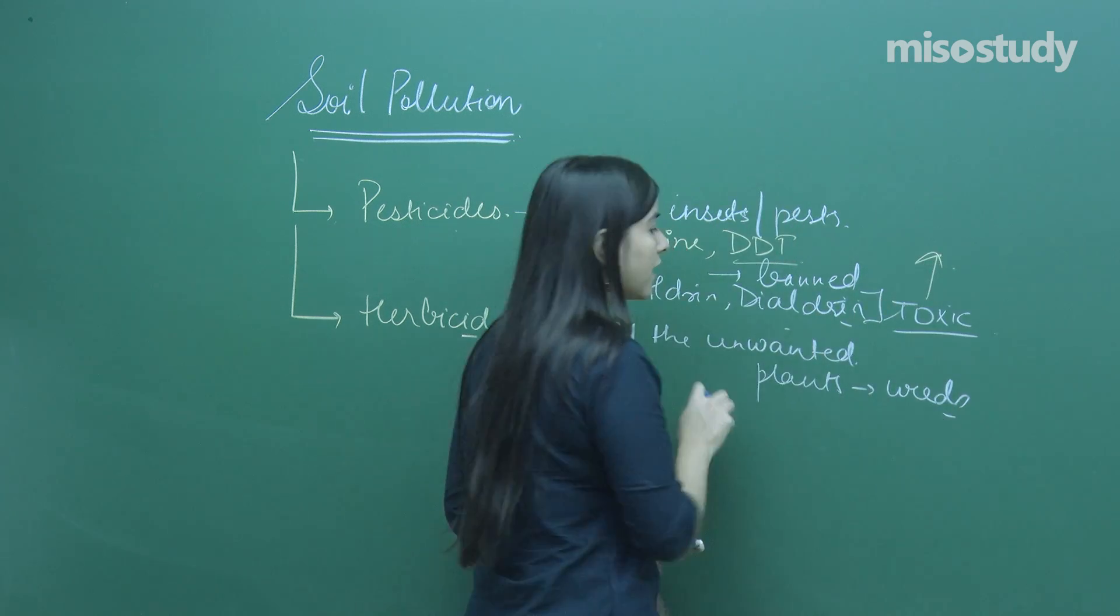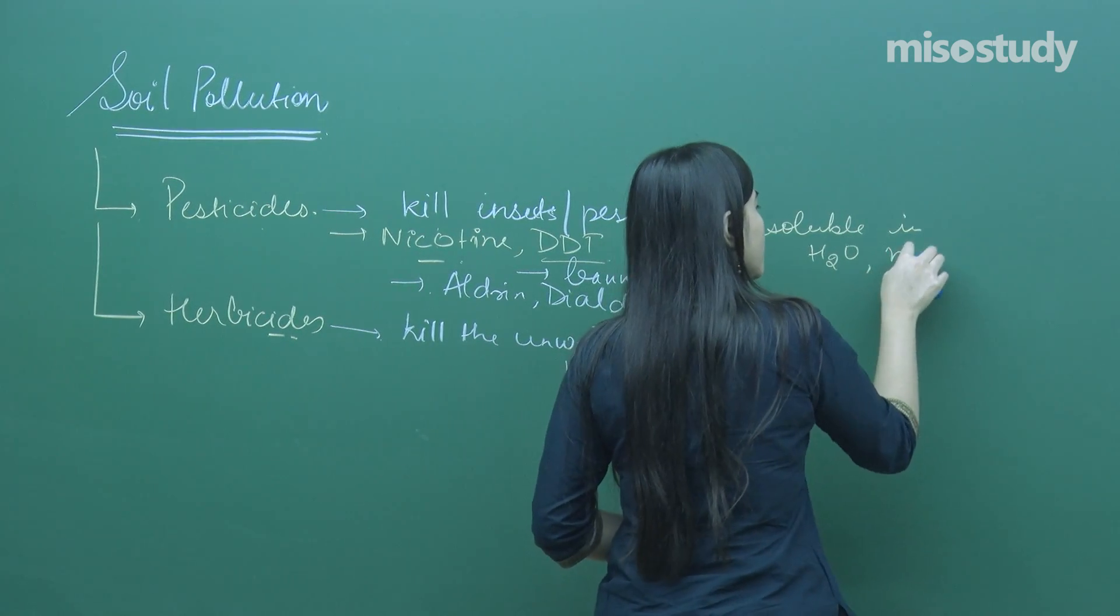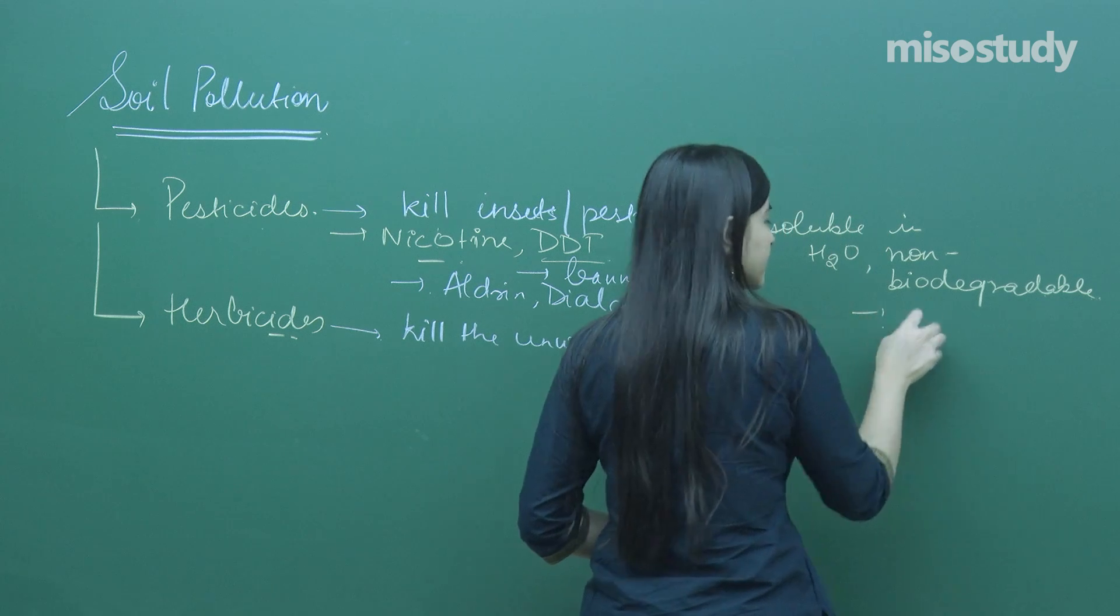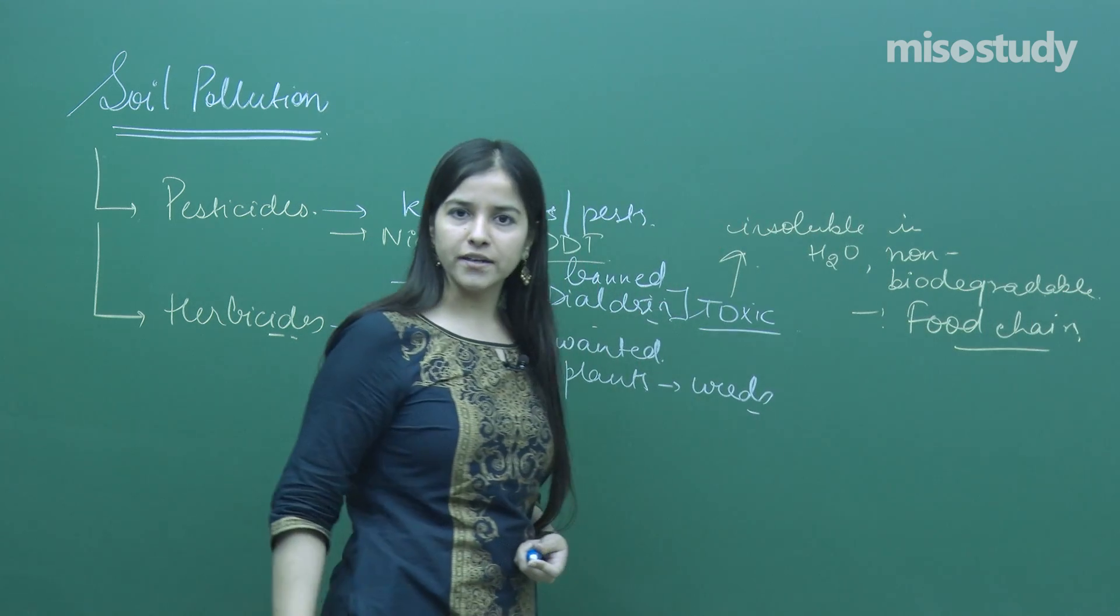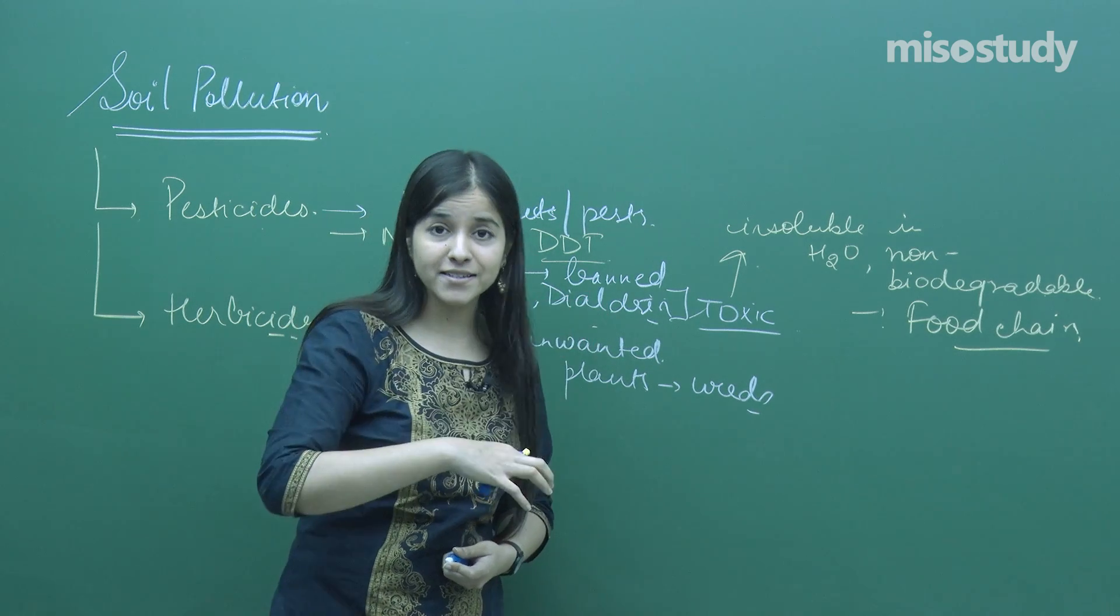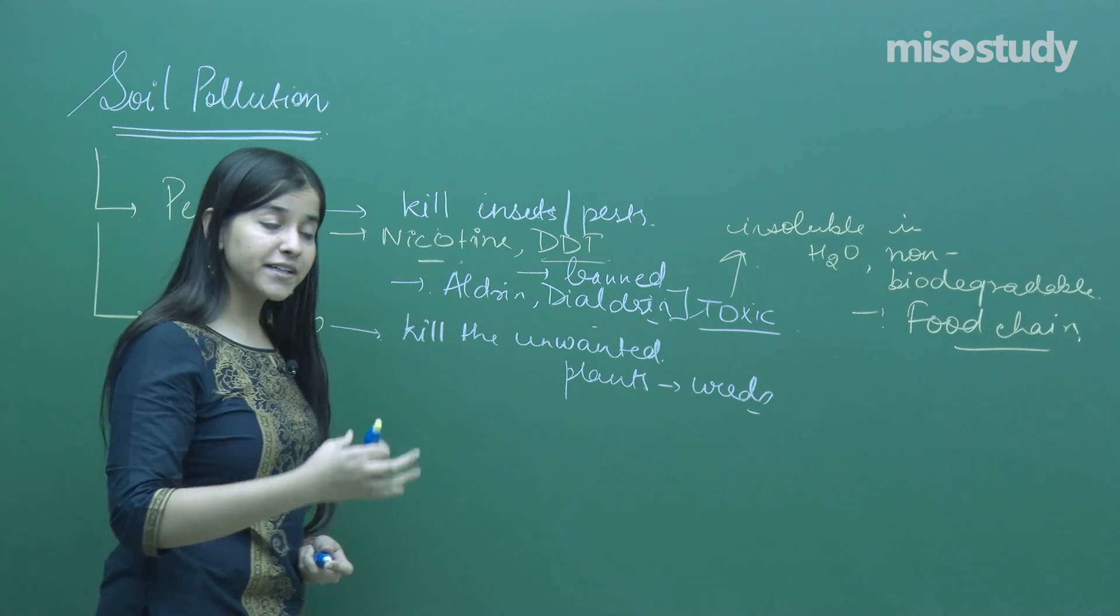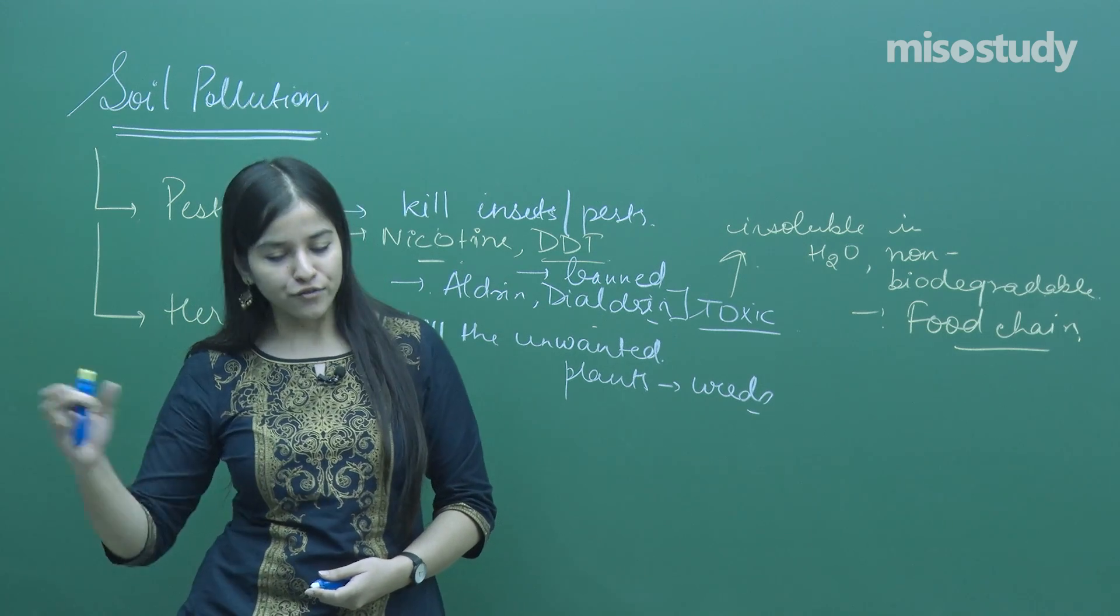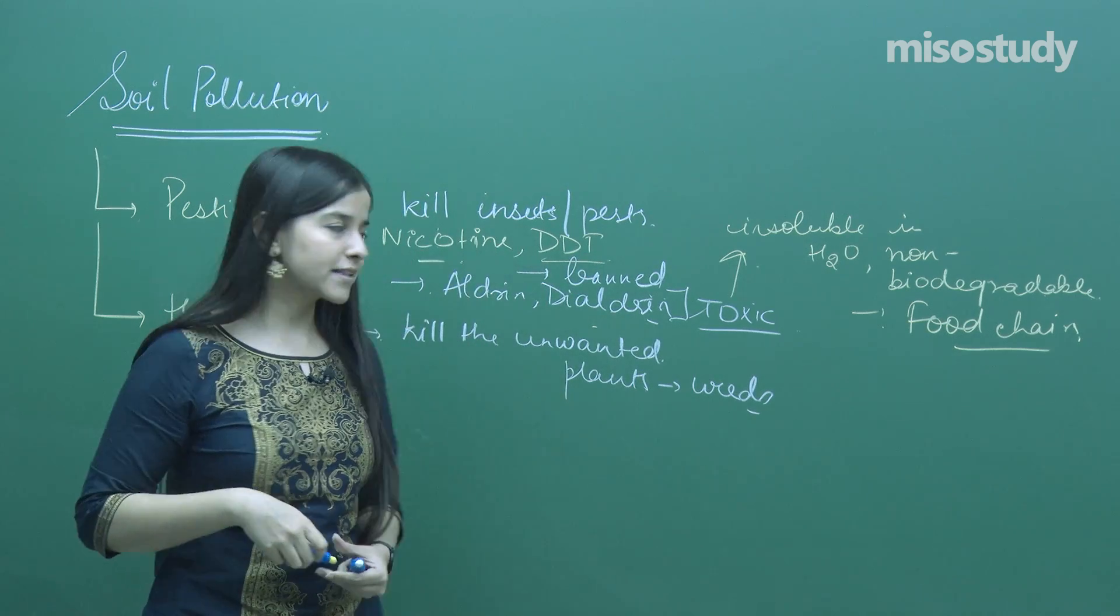They're toxic, non-biodegradable, and enter the food chain. They are insoluble in water and non-biodegradable. How do they enter our food chain? Smaller fish consume them, larger fish consume the smaller fish, and we consume the larger fish. That's how toxic metals and non-biodegradable components enter our body from fishes to plants to human beings.